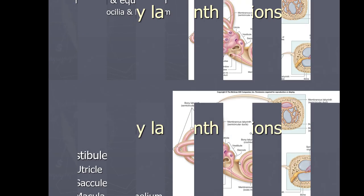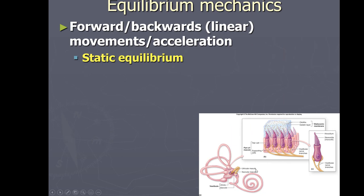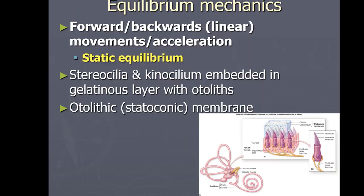To introduce them quickly: these are the semicircular canals, and this is the cochlea. In summary, the vestibule and semicircular canals are used in equilibrium, and the cochlea is used in hearing. Within the vestibule, the macula is a layer loaded with hair cells.